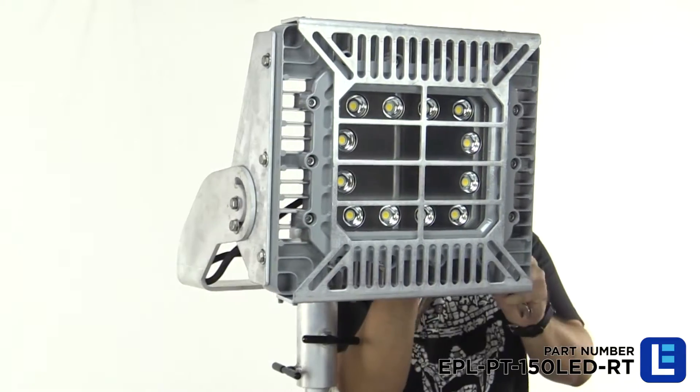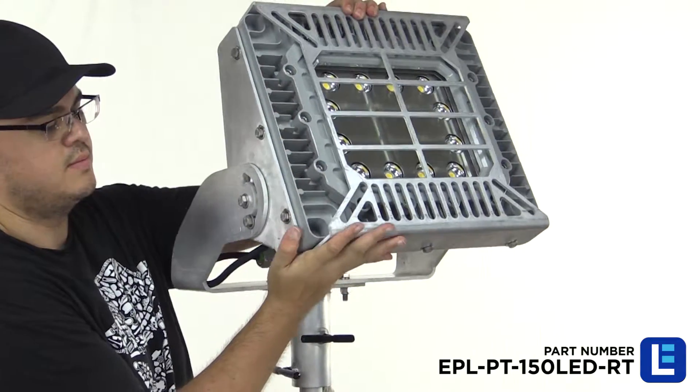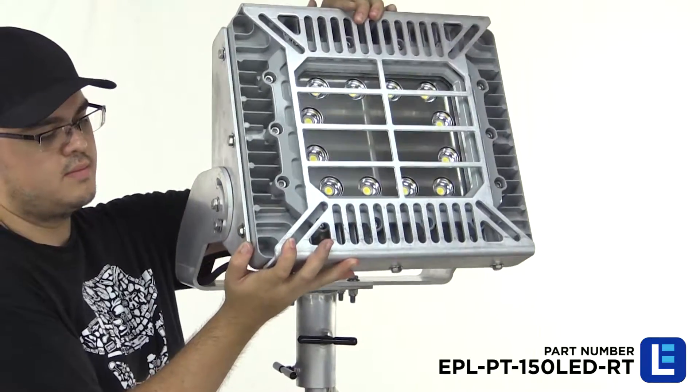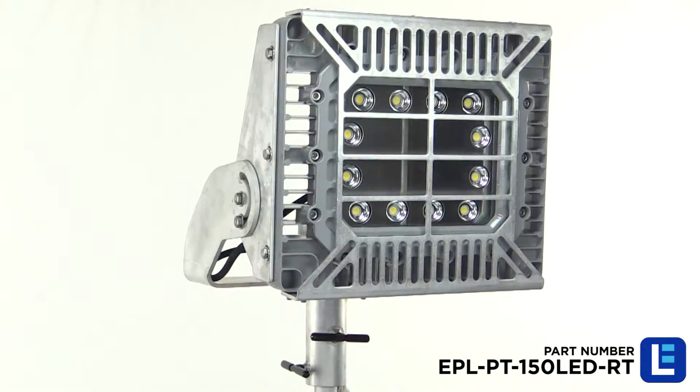The non-sparking aluminum frame includes an adjustable swivel bracket that enables up to 270 degrees of adjustment. Two T-handle screws are used to secure the unit to the pole.